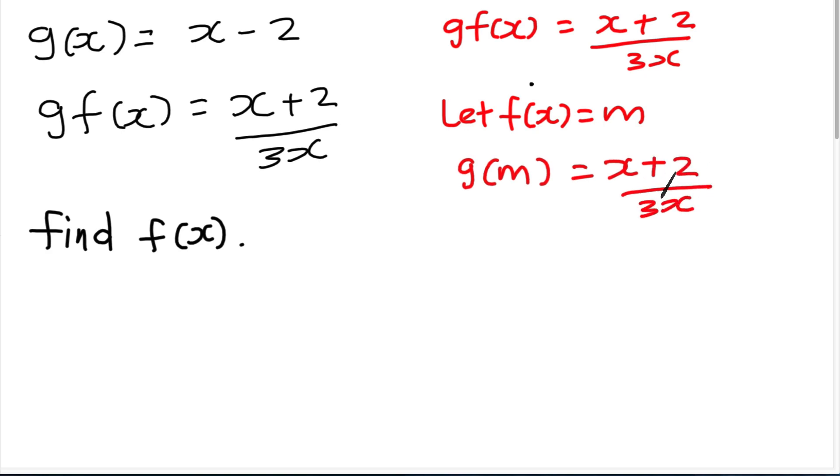GX, then do I have the G function? Yes, I have the G function. But then this one is GX, this is GM. So what I need to do is, if I change this one to GM, whatever X here, I can change to M. Do you see that? GM actually equals to M minus 2, so GM equals to M minus 2, so equals to X plus 2 over 3X.